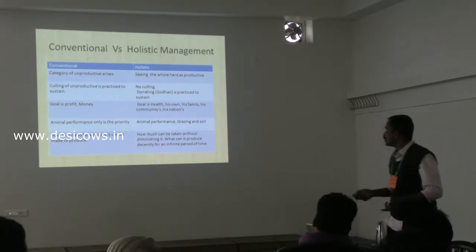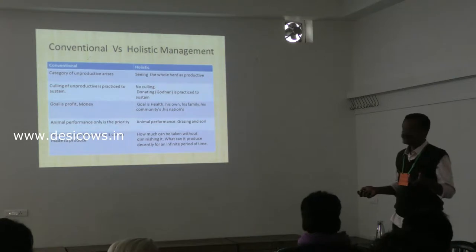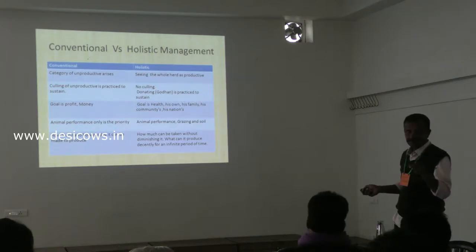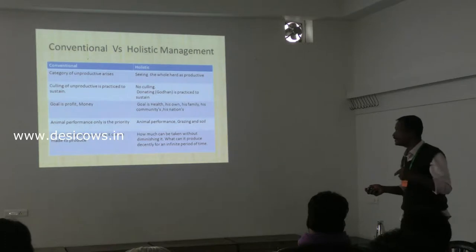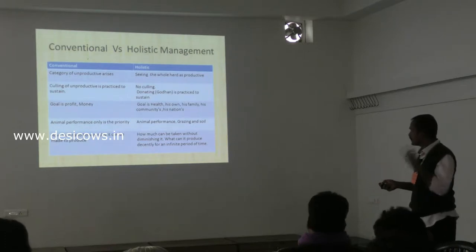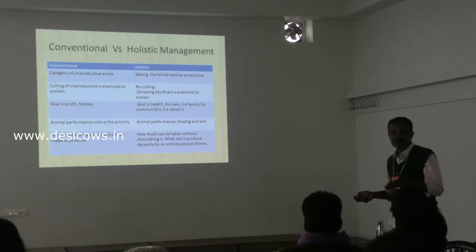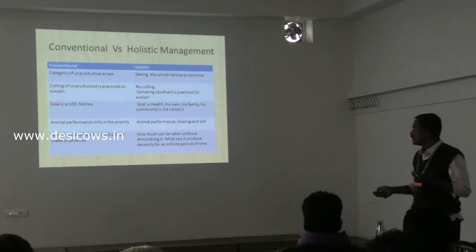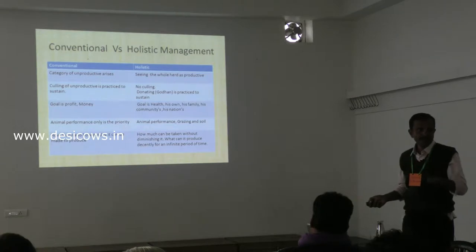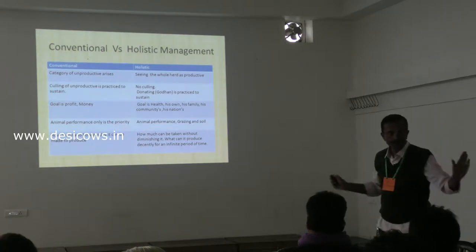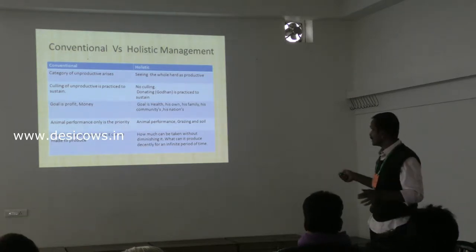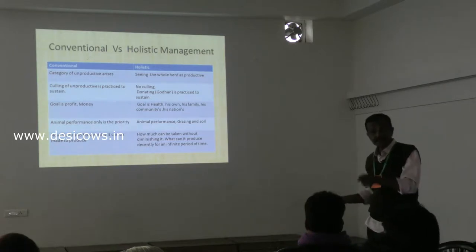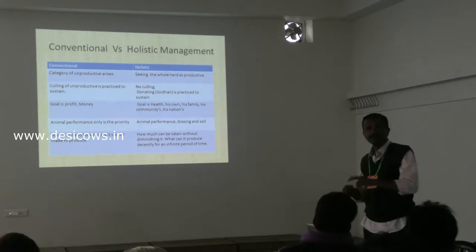In conventional farming the goal is profit or money. But in holistic farming the goal is health — the farmer's own health, his family's health, and his animals' health. Animal performance is totally the priority. Are they producing or not? But in holistic animal performance, grazing and everything is the priority.